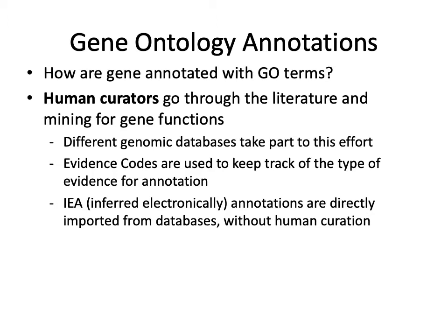One of the most useful aspects of gene ontology, on top of generating annotations for each gene across different genomes, is that they use what's called evidence codes to keep track of what kinds of evidence suggest that a gene performs a certain function or belongs to some particular process. One of the key annotations to look out for is labeled IEA, which stands for inferred electronically without human curation.